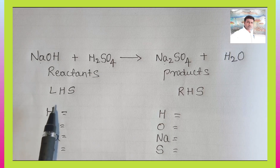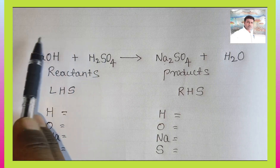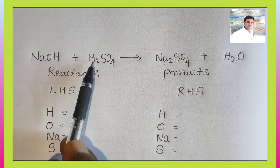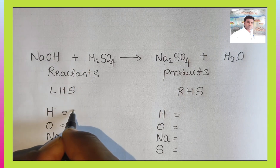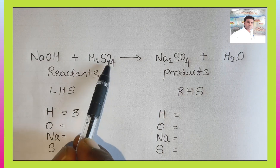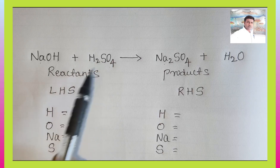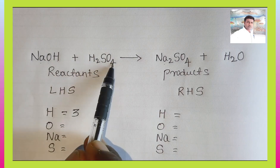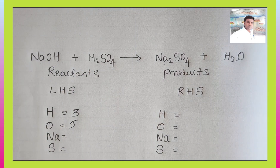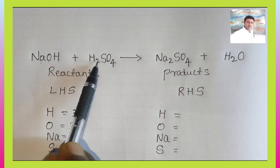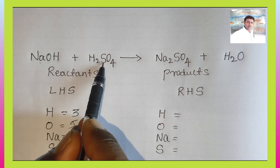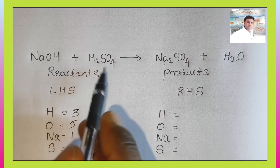How many hydrogen atoms are on the left side (reactant side)? In sodium hydroxide there is 1 hydrogen, and in sulfuric acid there are 2 hydrogens — total 3 hydrogen atoms. For oxygen: sulfuric acid has 4 oxygen atoms and sodium hydroxide has 1 oxygen atom, so 4 plus 1 equals 5 oxygen atoms. Sodium: only 1 sodium on the reactant side. Sulfur: only 1 sulfur — write 1.